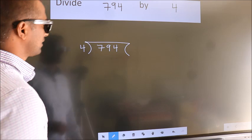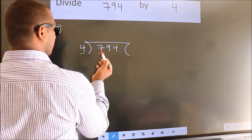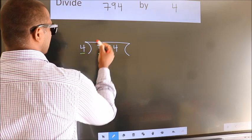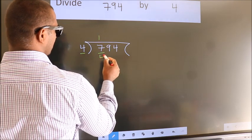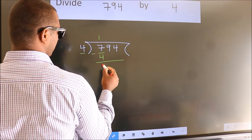Next, here we have 7, here 4. A number close to 7 in 4 table is 4 once 4. Now, we should subtract. We get 3.